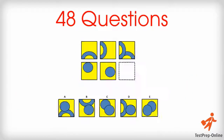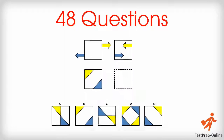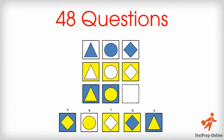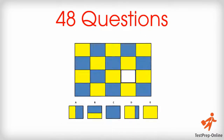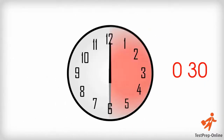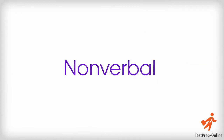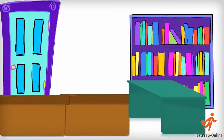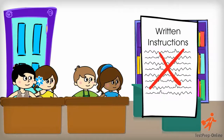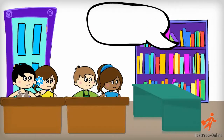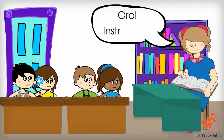The NNAT contains 48 multiple-choice questions and takes 30 minutes to complete. It's a completely nonverbal test, meaning that no written or oral instructions are given.